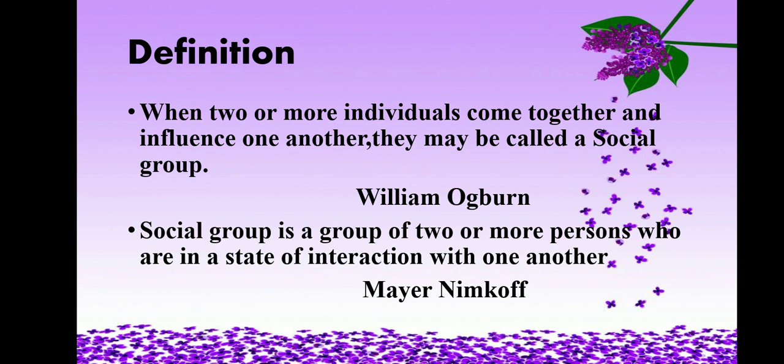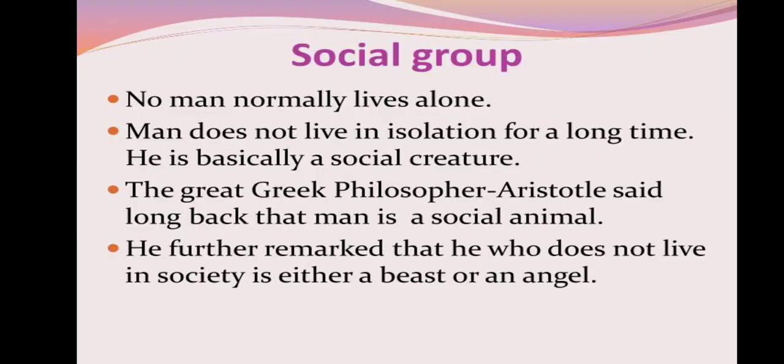Definition: When two or more individuals come together and influence one another, they may be called a social group, as said by William Ogburn. A social group is a group of two or more persons who are in a state of interaction with one another, as said by Mayer Nimkoff. No man normally lives alone — man does not live in isolation for a long time. He is basically a social creature. The great Greek philosopher Aristotle said that man is a social animal, and further remarked that he who does not live in society is either a beast or an angel.